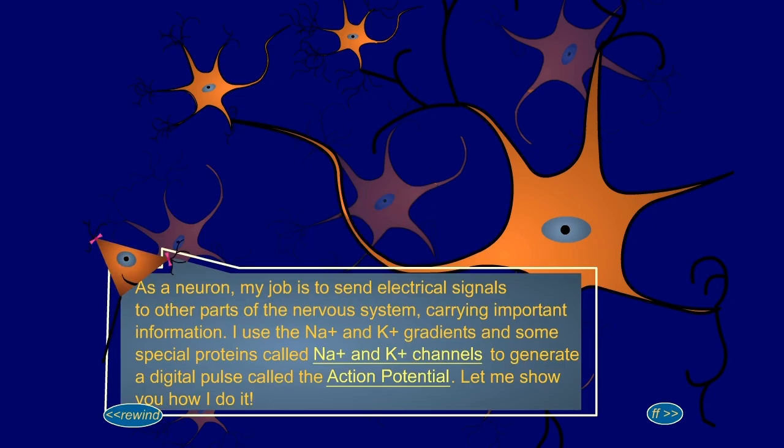As a neuron, my job is to send electrical signals to other parts of the nervous system, carrying important information. I use the sodium and potassium gradients and some special proteins, called sodium and potassium channels, to generate a digital pulse called the action potential. Let me show you how I do it.